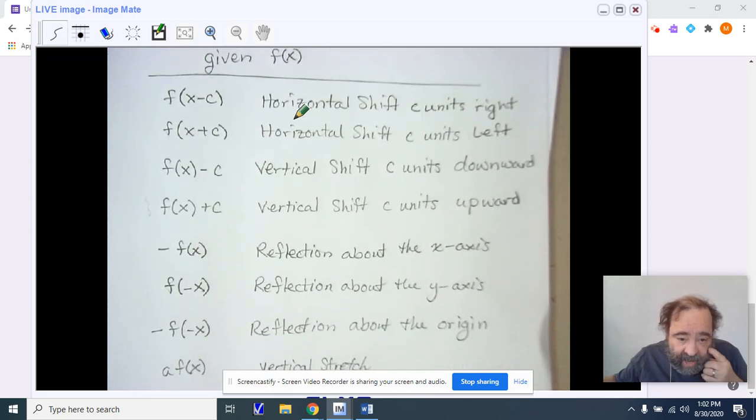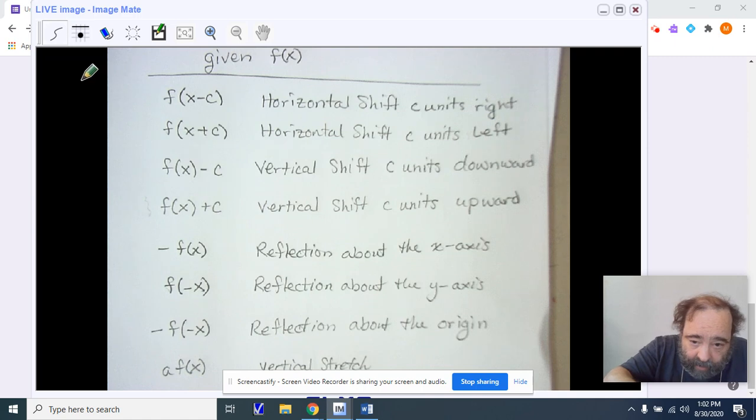We have a negative in front of the x. We'll represent or identify a reflection about the x-axis. And f of negative x represents a reflection about the y-axis. Notice that what we get if I'm putting a negative in front of the f of x. f of x represents y. So a negative y represents the x-axis. A negative x represents the y-axis. When we use both, a negative f of negative x, we're reflecting around the origin.